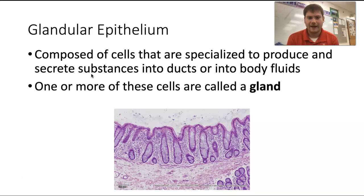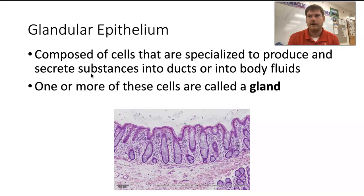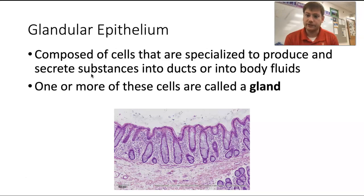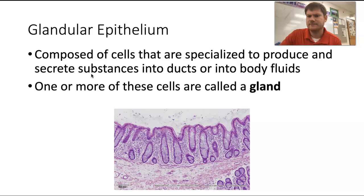Glandular epithelium is composed of cells specialized to produce and secrete substances into ducts or into body fluids — these are called glands. This includes sweat glands, different types of hormones, pancreatic and digestive juices secreted by your pancreas or liver. We'll spend more time on specific gland types when we cover the digestive system, endocrine system, and integumentary system.